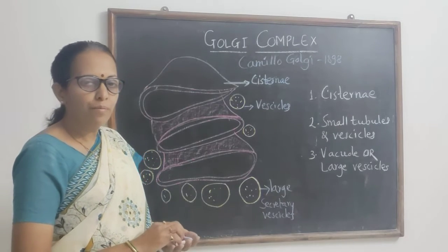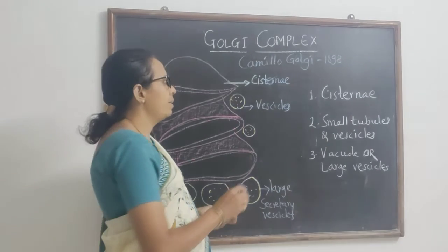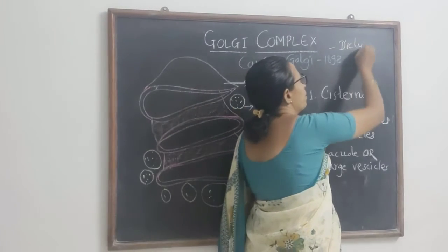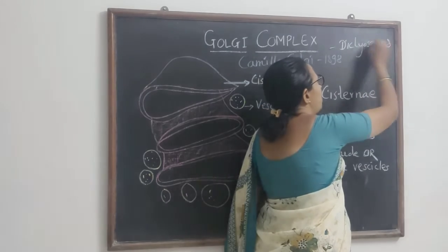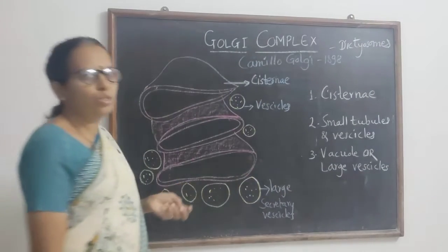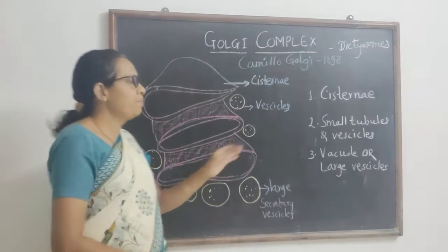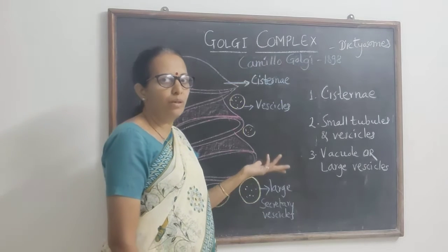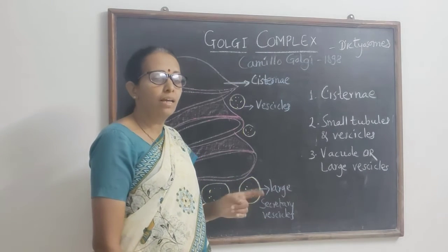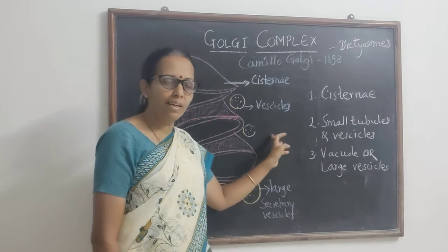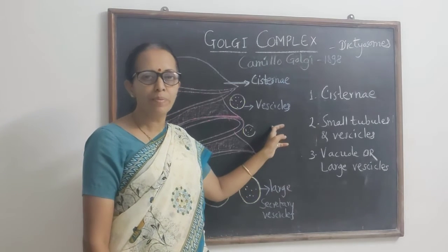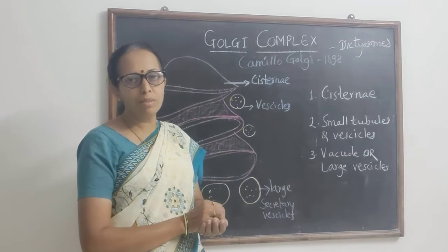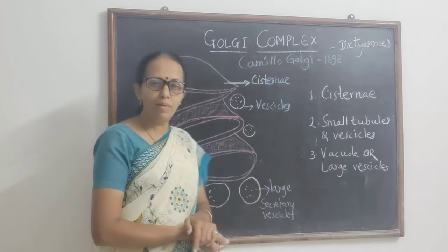In the case of plant cells, we call them Dictyosomes — that is another name given in case of plants. Usually their number is single in case of animal cells, located between the nucleus and the secretory end of the cell, while in the case of plant cells, the number is more as compared to animal cells.